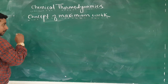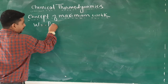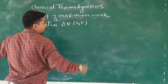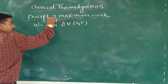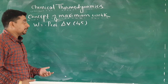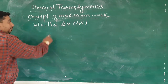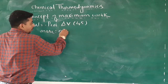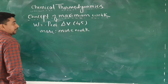Concept of maximum work. According to equation number 4.5, work done is given by w = −P_ext × ΔV. The work done depends upon the external pressure. More the external pressure, more work is to be done by the system to overcome the external pressure.